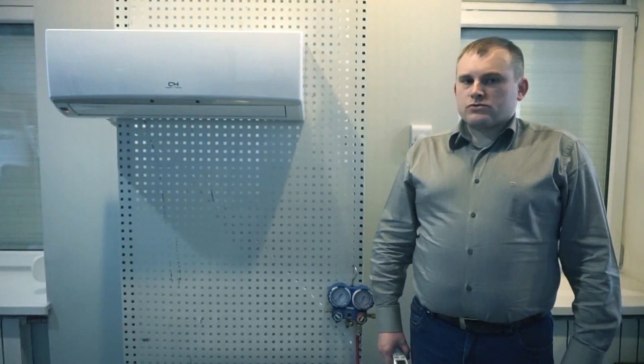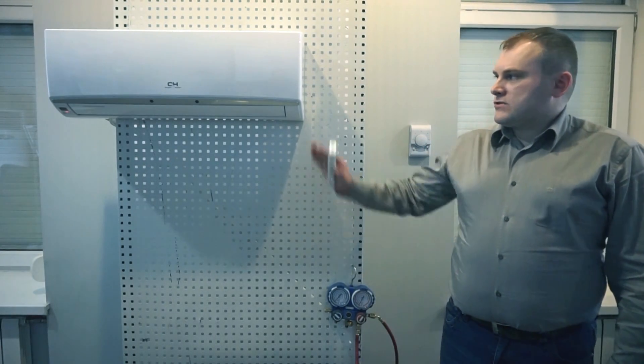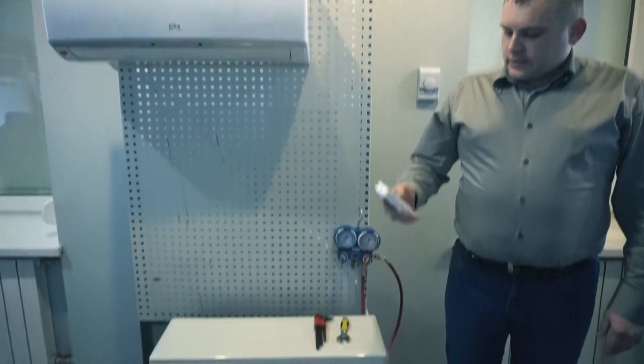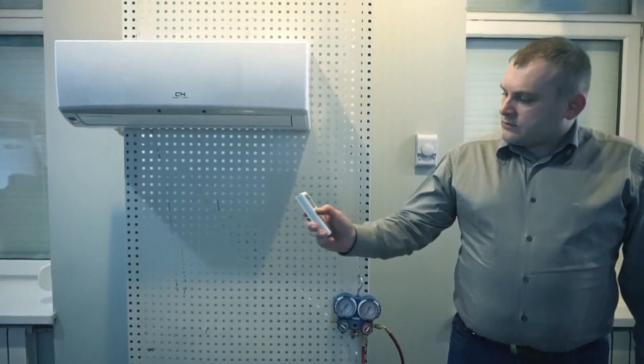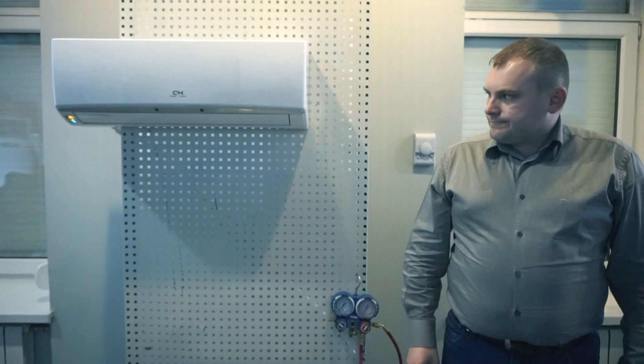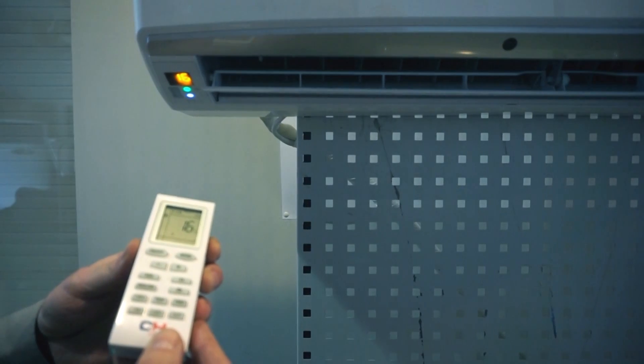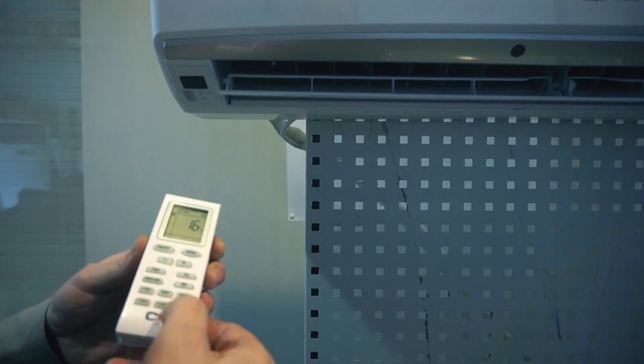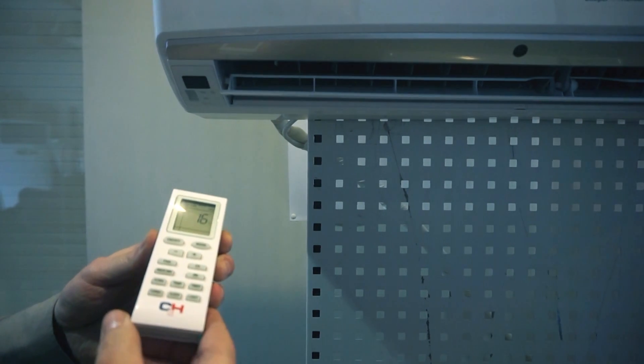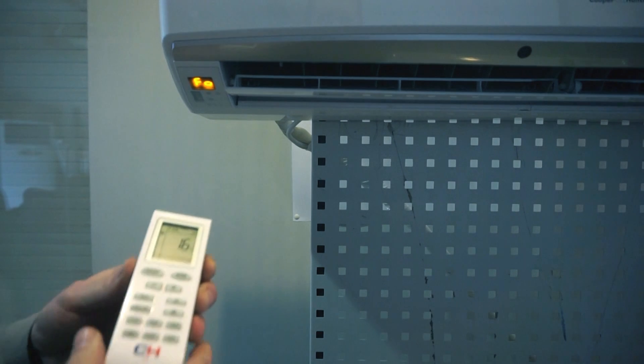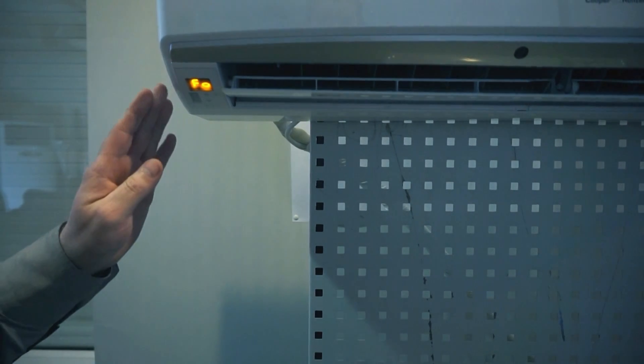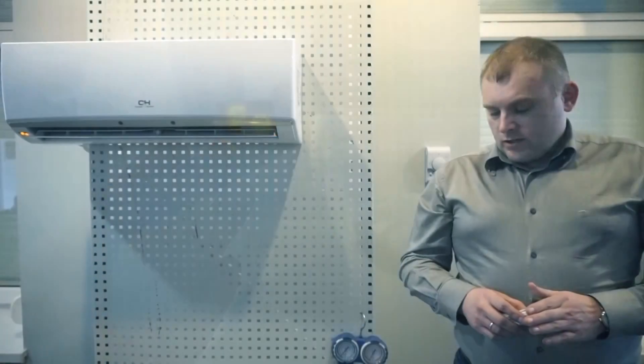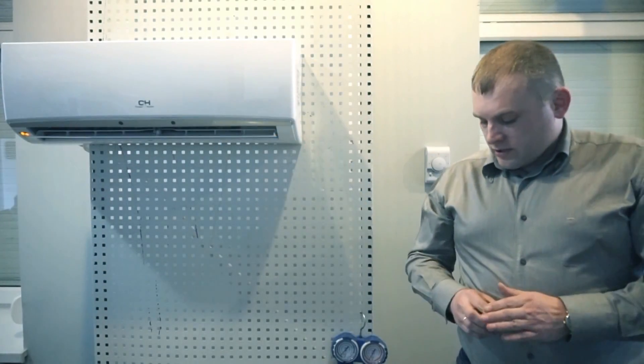Hello. Consider the collect refrigerant function from the split system. For this, we turn on our air conditioner in the cooling mode. The function must be activated by pressing the light button three times for three seconds. The beginning of the function shows on the display of the indoor unit as F0.